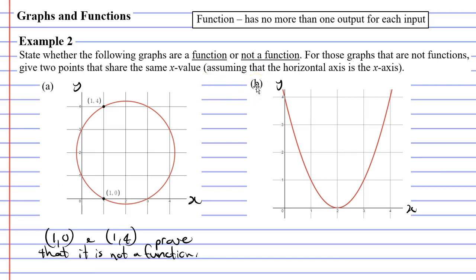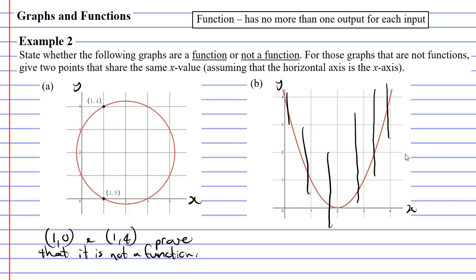Looking at question B, out of the two dot points the one I prefer most is the vertical line test — I just find it quicker and easier. When we look at this graph and draw vertical lines, it only passes through one point — it never passes through two or more points. This means that it is a function.